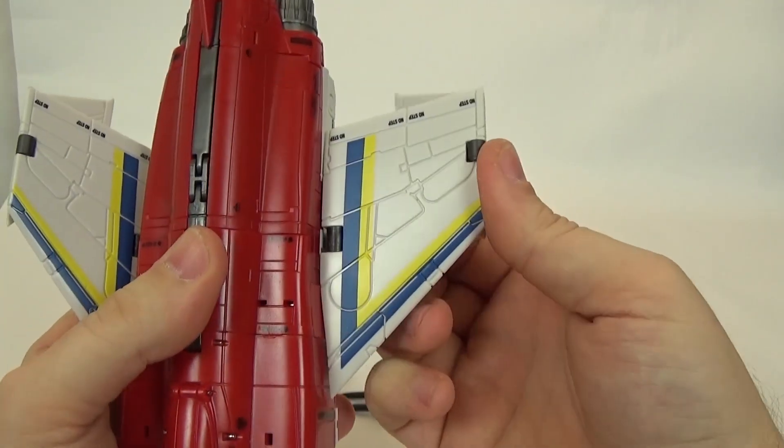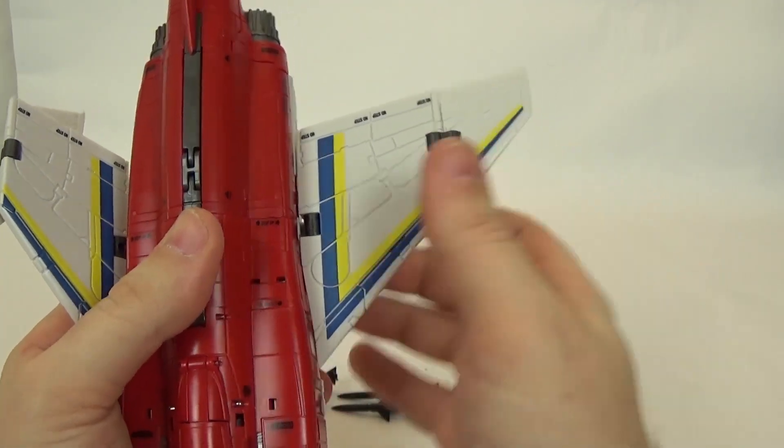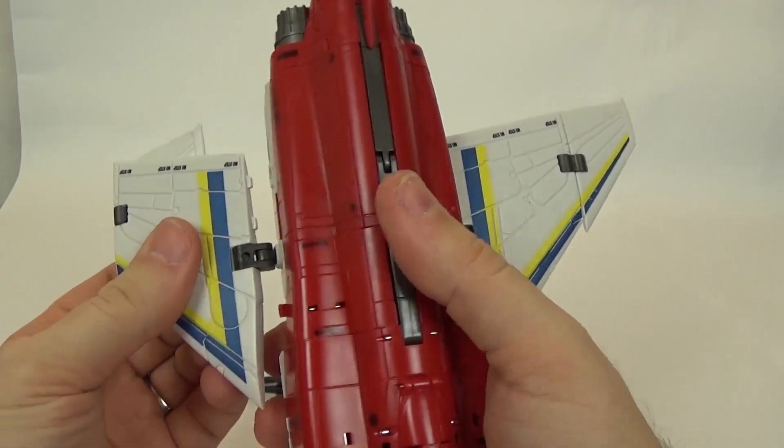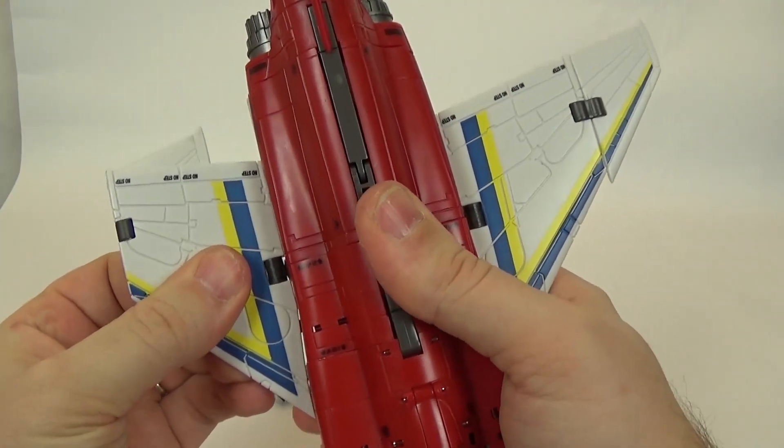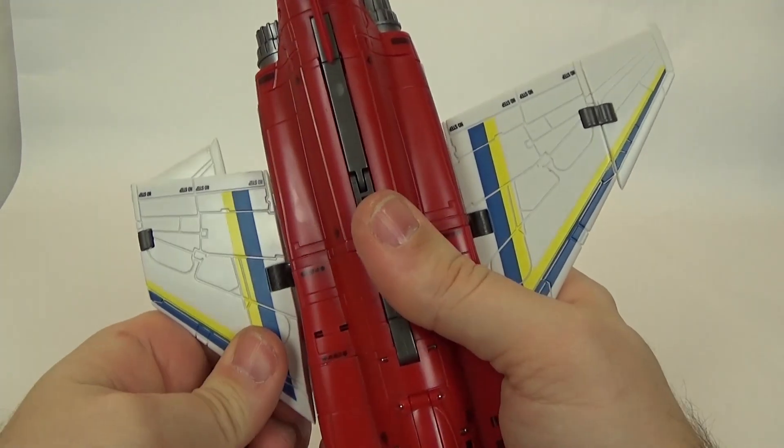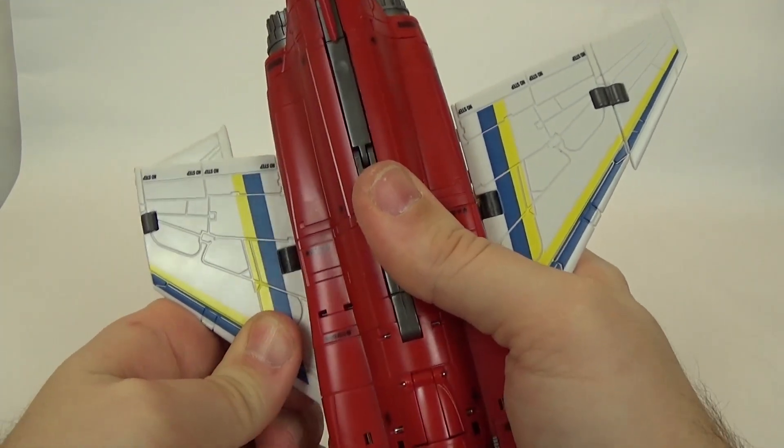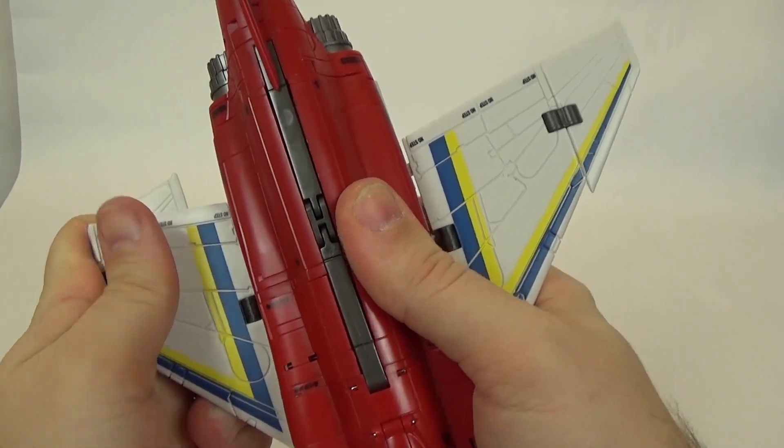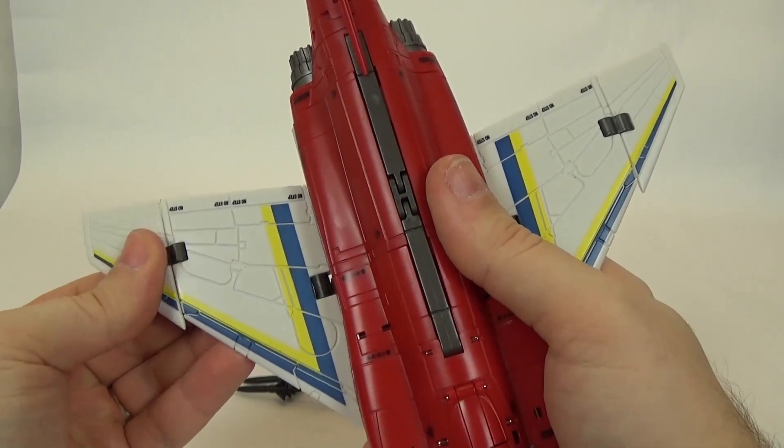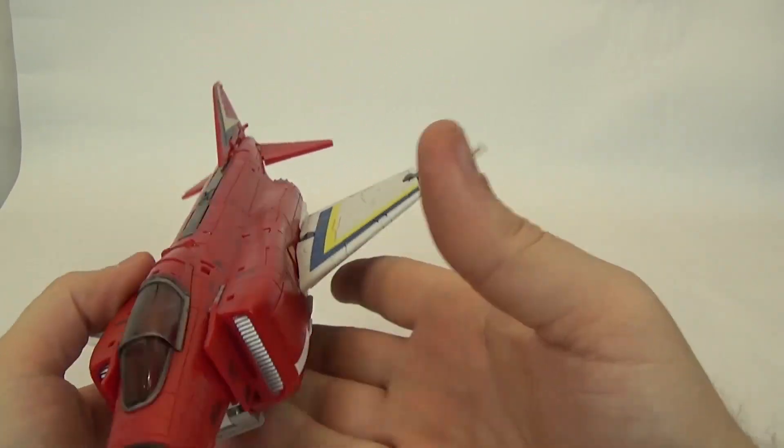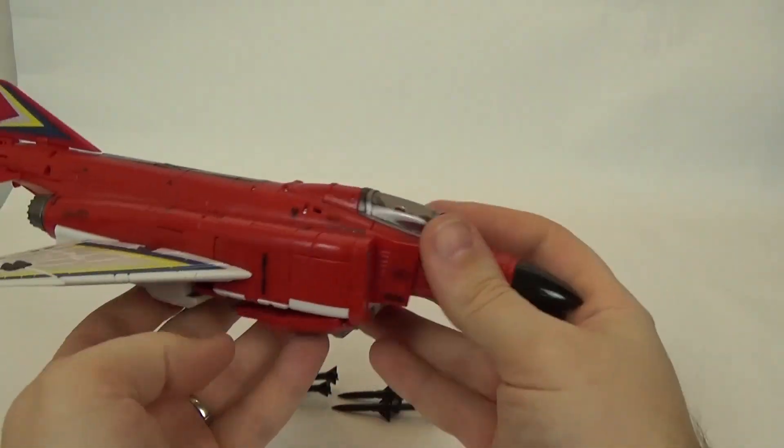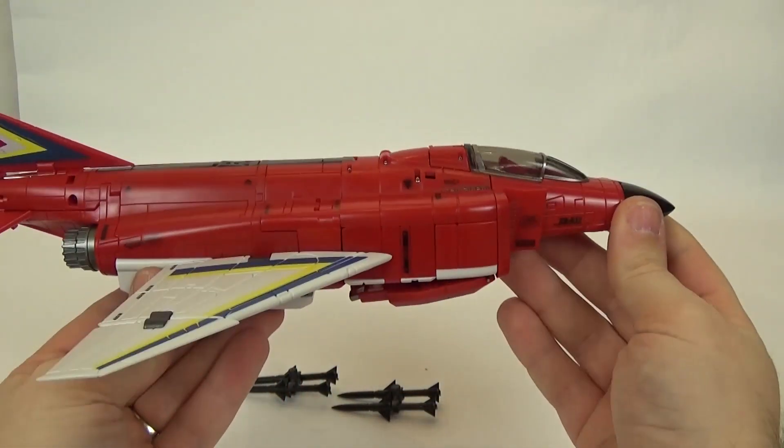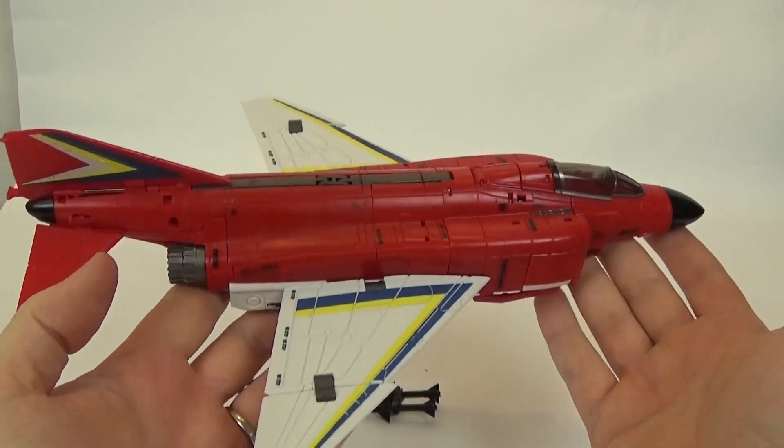And, we'll just make sure everything tabbed in together. And, then all you have to do is come up to the wings. And, you bring them up on that hinge. Extend the end of the wing. Same thing on this side. Just collapse that up. Make sure everything tabs in where it should. And, there you have him in his jet mode.